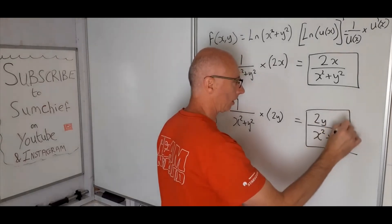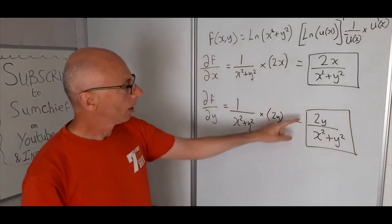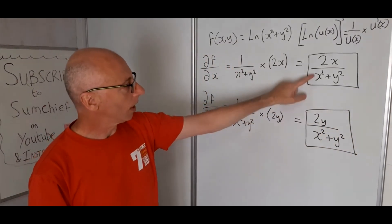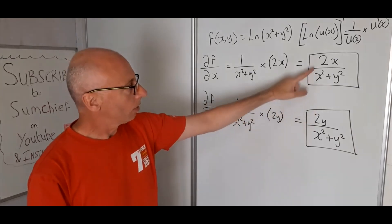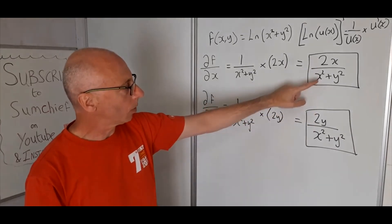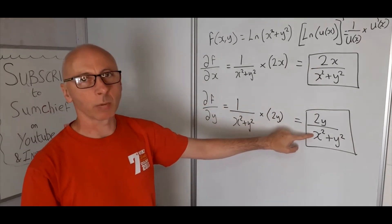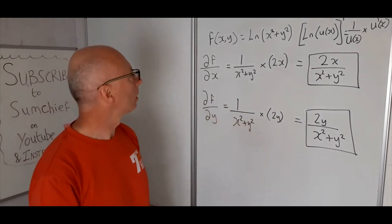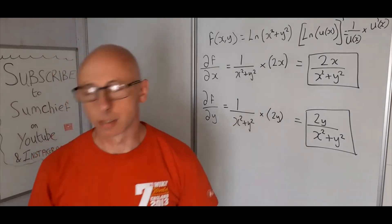And that's as simple as we can get. As we can see, the two results are very similar: 2x over x squared plus y squared, and 2y over x squared plus y squared.